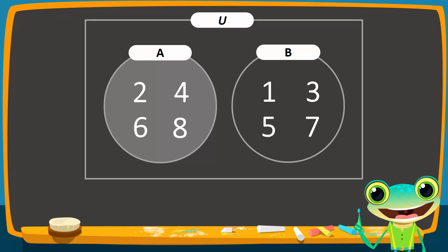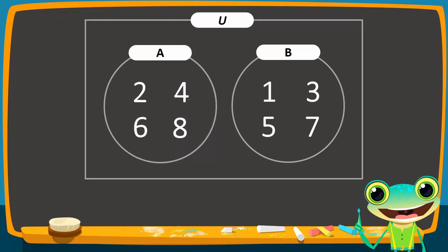To verify, we can see that A difference B is equal to set A. Therefore, when sets A and B are disjoint, A difference B is represented by shading only the circle for set A. Similarly, B difference A contains elements only in set B, and this is shown by shading the full circle of set B.